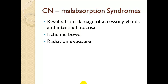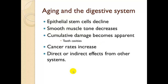Clinical note: malabsorption syndromes result from damage to the sensory glands and intestinal mucosa. Causes include ischemic bowel, where decreased blood supply affects sections of bowel, and radiation exposure to the intestinal area, which causes a gastrointestinal phase of radiation sickness. Regarding aging and the digestive system: epithelial stem cells decline, smooth muscle tone decreases, and cumulative damage becomes apparent — for example, teeth and cavities. Cancer rates increase as a direct or indirect effect of aging on other systems.